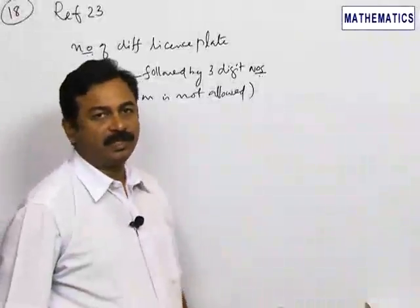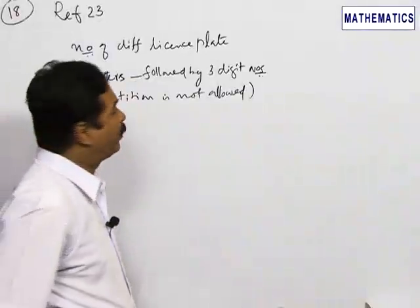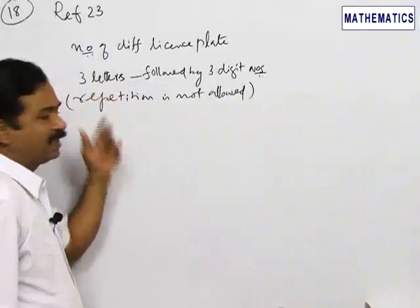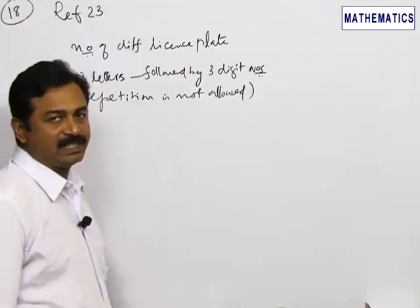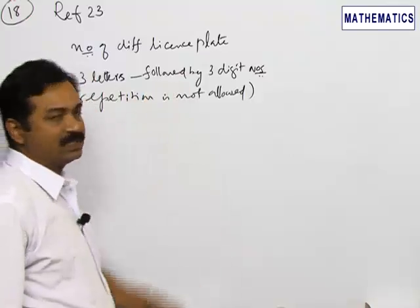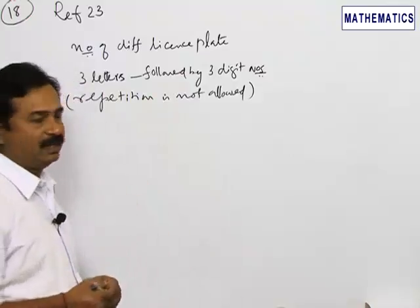Now let us refer to question number 23. It is given that the number of different license plates has to be prepared using three alphabetical letters, followed by a three-digit number, and repetition is not allowed either in the alphabet or in the digits.